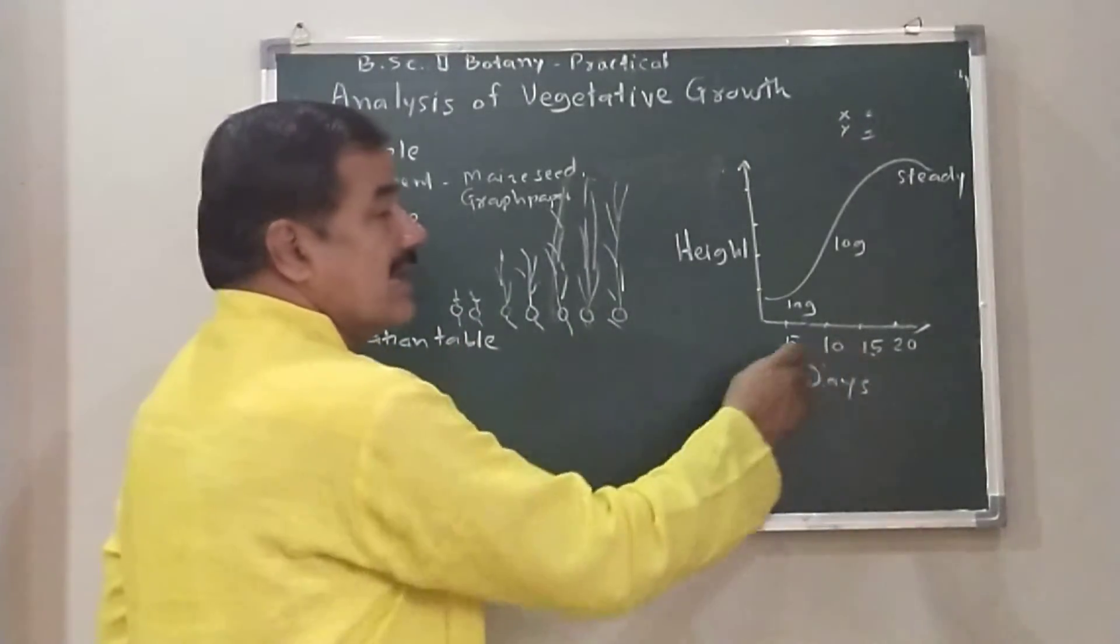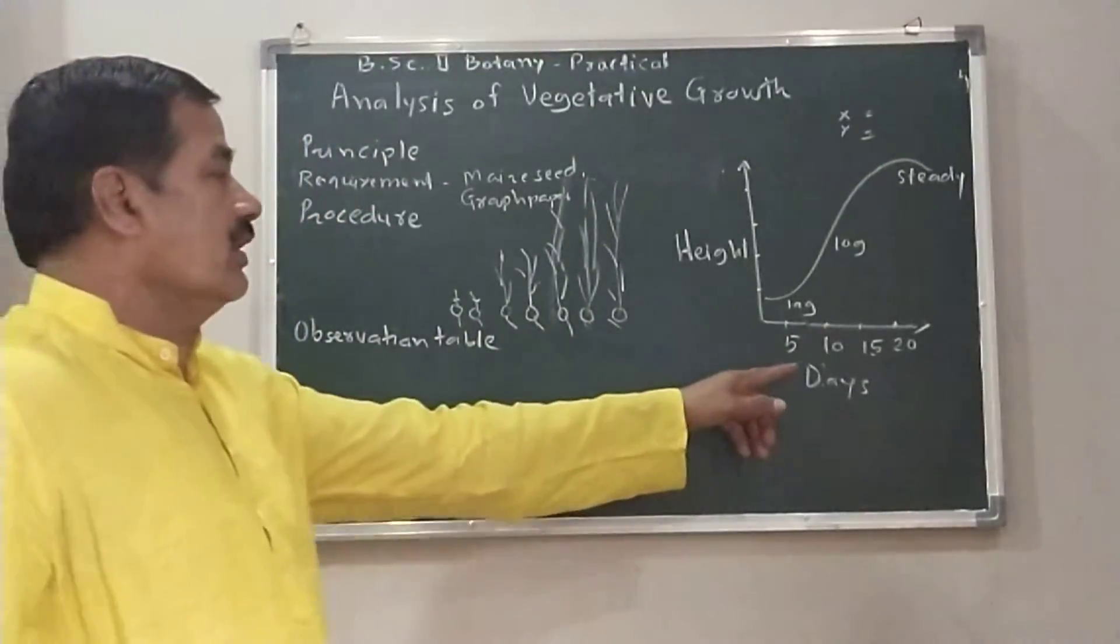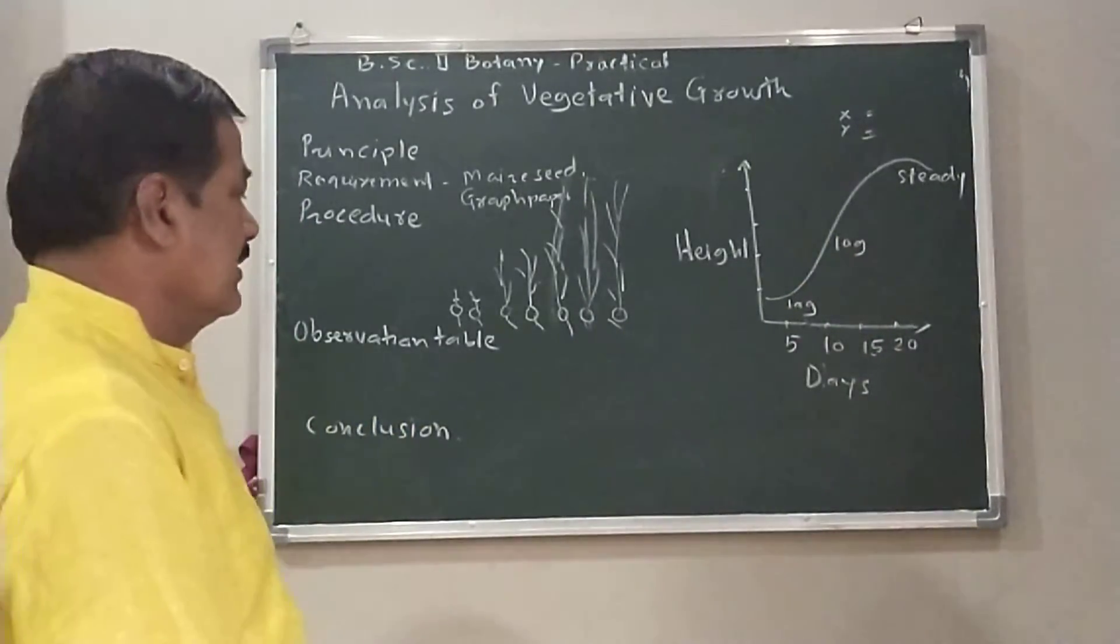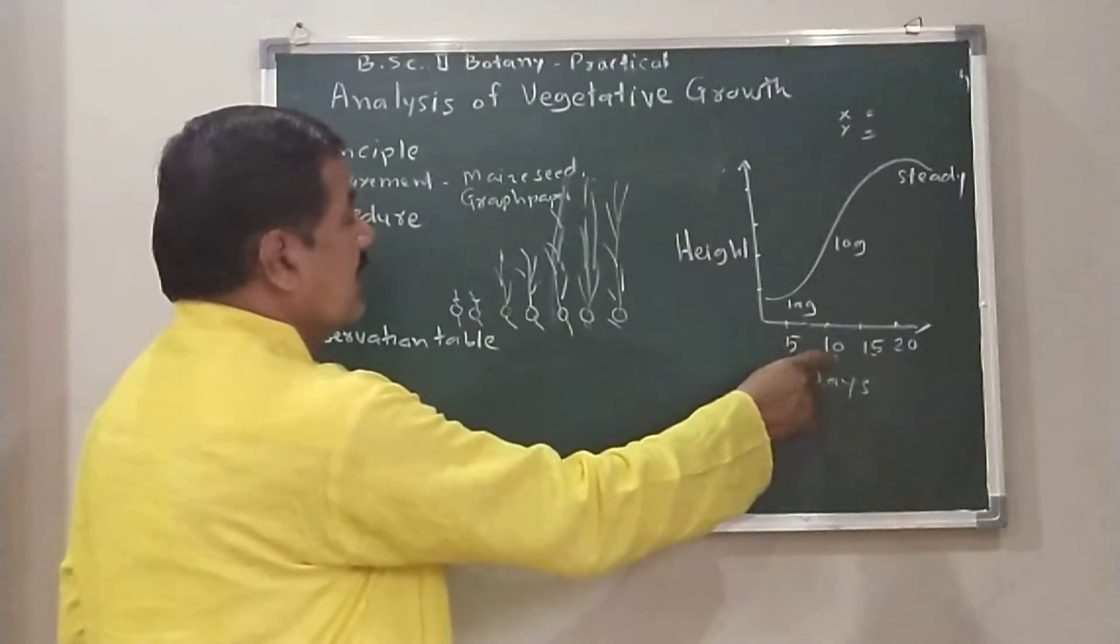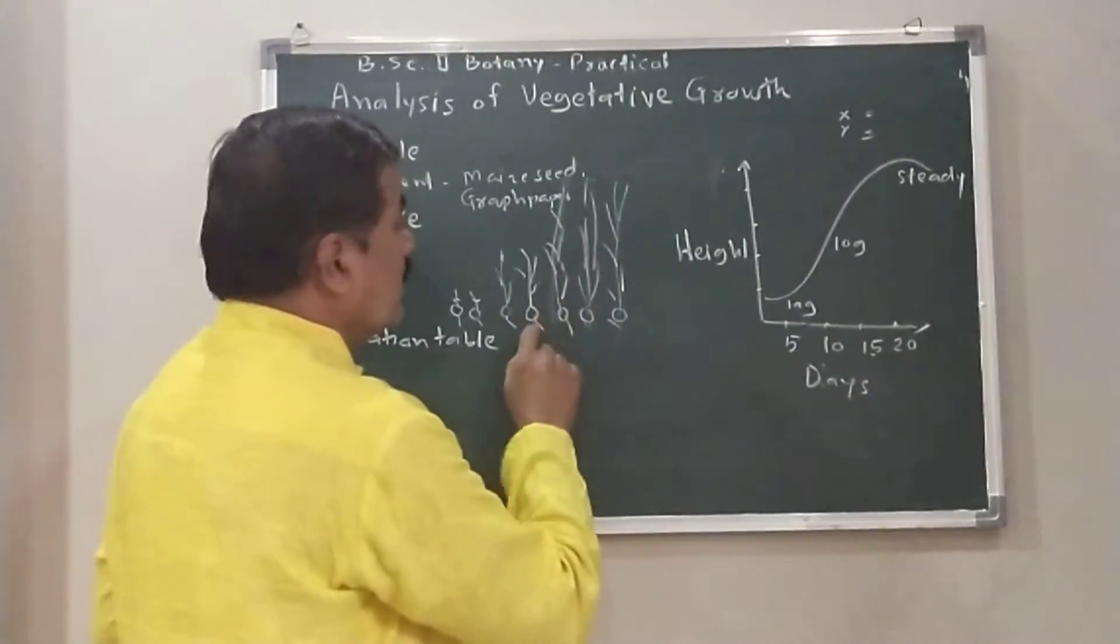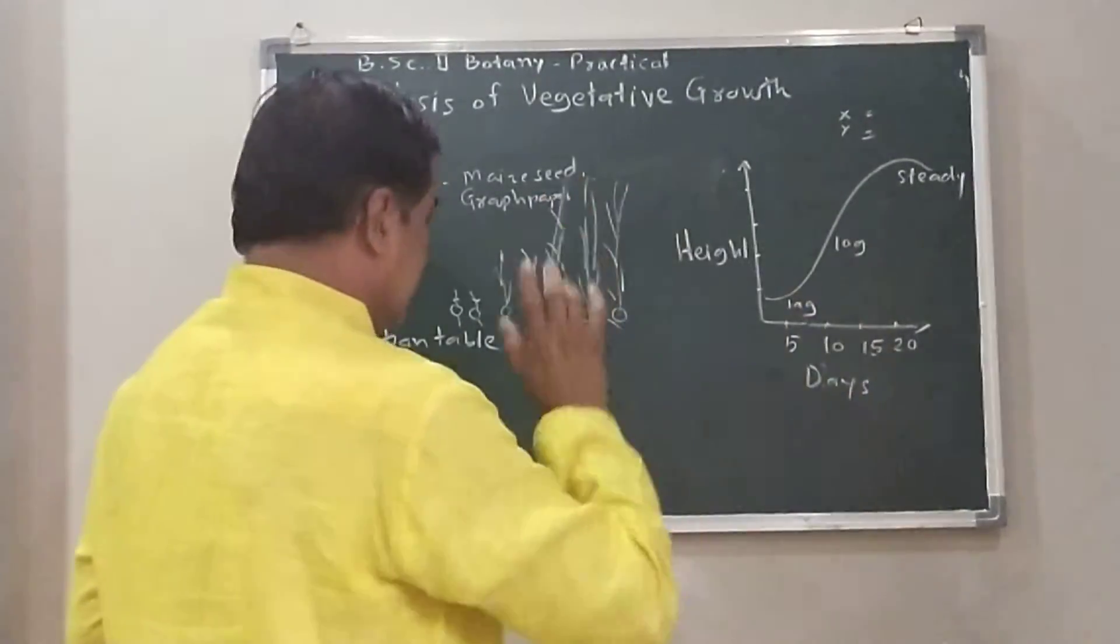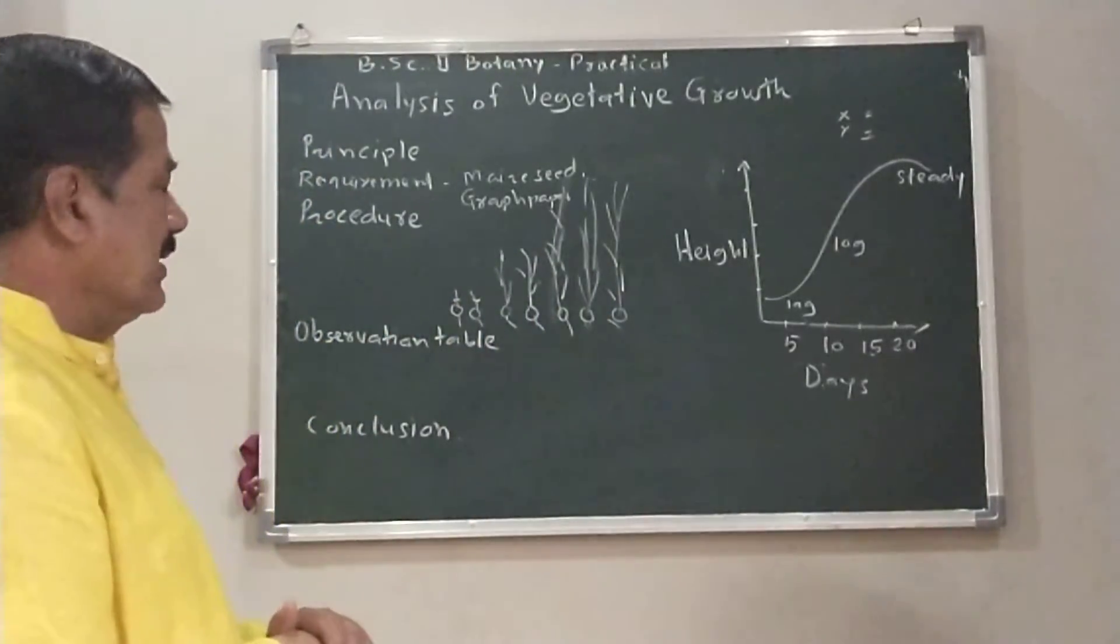The days are artificially assigned because this is a demonstrating practical. First seedling has five days, second seedling has ten days, third has fifteen, fourth has twenty, and so on. Such type of observation table is made.